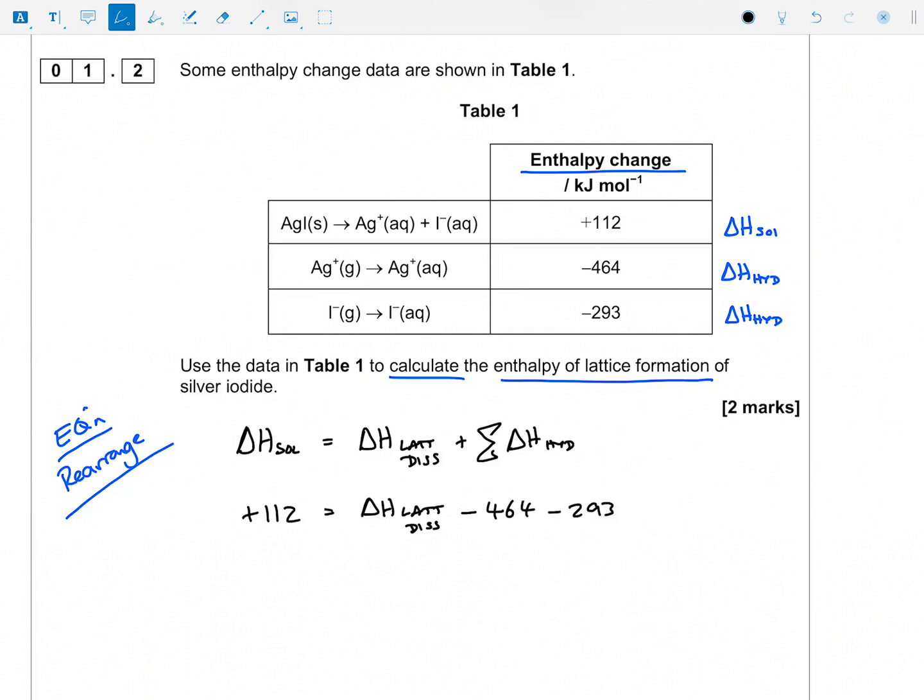I'm going to take this over here because I know that the enthalpy of lattice formation is going to be an exothermic reaction, so minus delta H lat, or the negative. So this will be lattice association here. Basically lattice, or lat-ass, which is lattice formation, that equals minus 112 minus 464 minus 293.